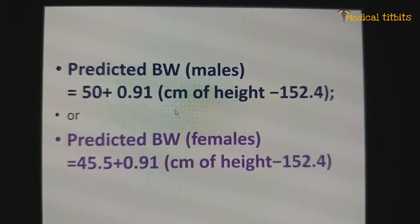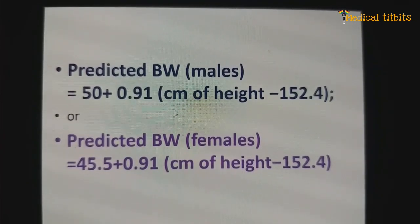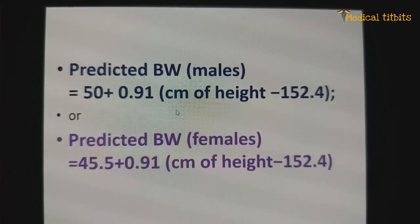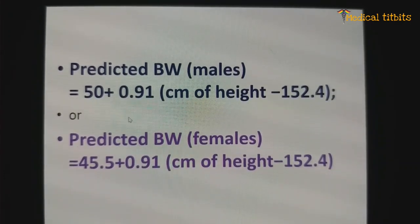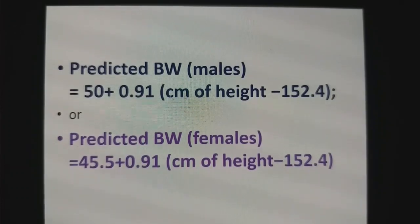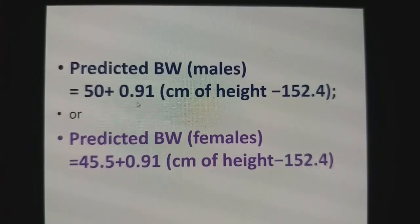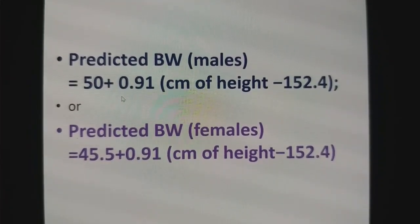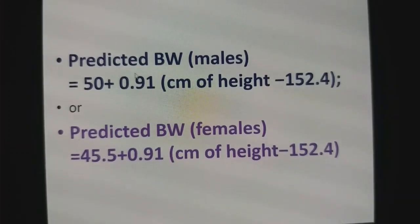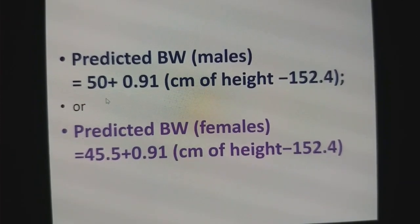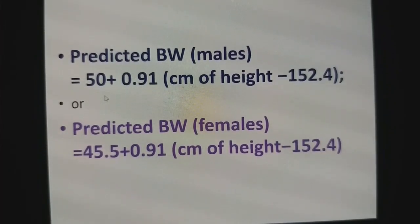Most of us tend to deliver higher tidal volume in obese patients — that is incorrect. If we consider the average lowest height in the Indian population is 5 feet, that is 150 cm, then using the formula: 50 plus 0.9 into (150 minus 150) equals 50 plus 0, so predicted body weight is 50 kg and tidal volume is 300 mL. So if you are managing a patient of 5 feet height, your tidal volume should not go beyond 300 mL.